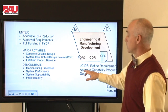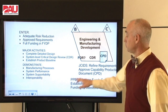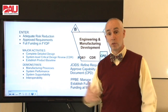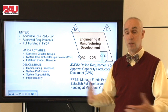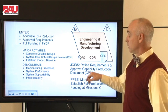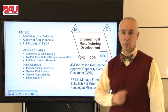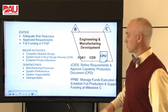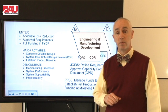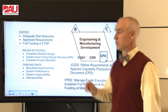We also have to prove interoperability, supportability, and all those areas of system performance. JCIDS will be refining the requirements — we need dialogue with our users to capture lessons learned through the development and design. They will update the Capability Development Document into a Capability Production Document, which has to be signed and approved prior to Milestone C. We've got to continue to manage our funds and make sure we have full funding for the production and support of the system going forward into the next phase.